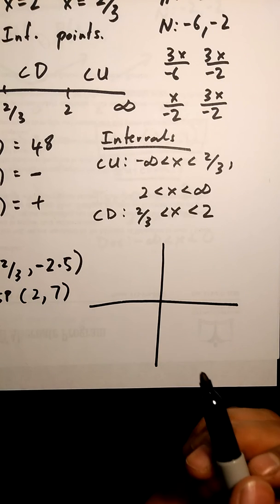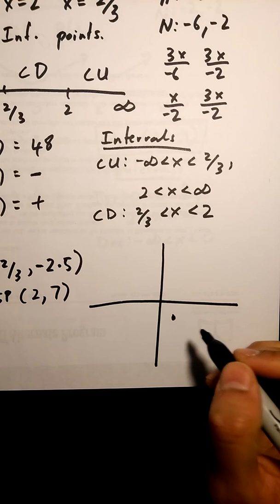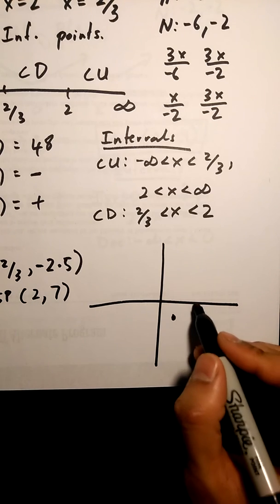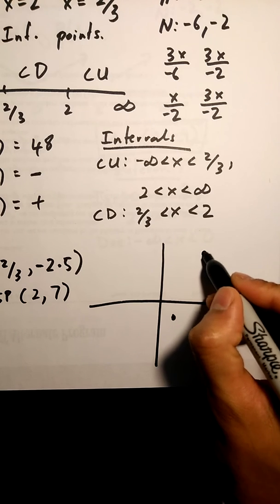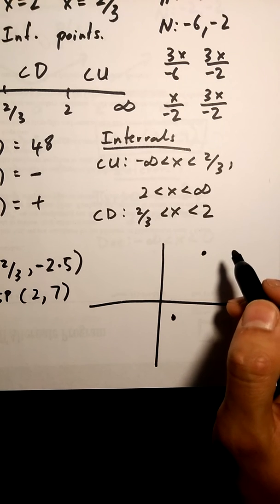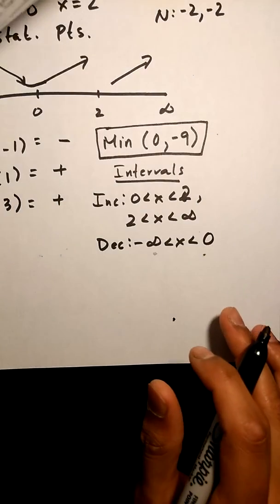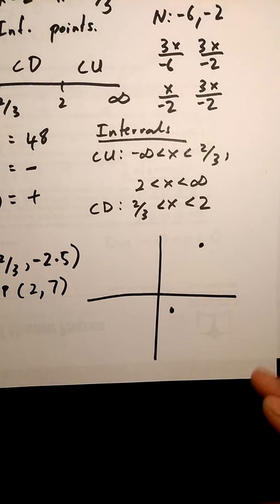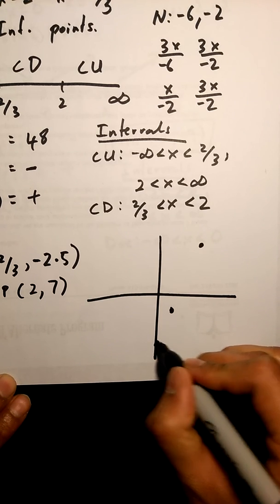Start by putting that inflection point 2 over 3 and negative 2.5, next 2 comma 7, and last my minimum is at 0 comma negative 9, so 0 and negative 9 would be down here.